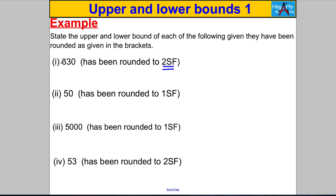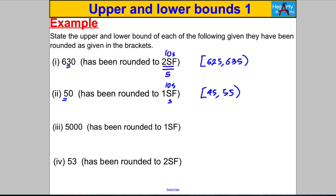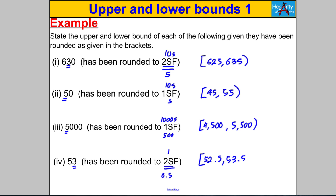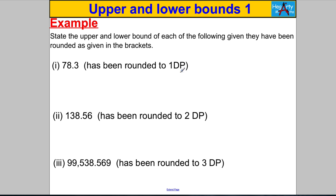Now find bounds using significant figures. 630 to 2 SF: the second significant figure is in the tens column, so we've rounded to the nearest ten — half of 10 is 5, giving 625 and 635. One SF with first significant figure in the tens column: rounded to nearest ten, bounds are similar. One SF with first significant figure in the thousands column: rounded to nearest thousand, half is 500, bounds are 4500 and 5500. Two SF with second significant figure in the ones column: half of 1 is 0.5, bounds are 52.5 and 53.5.